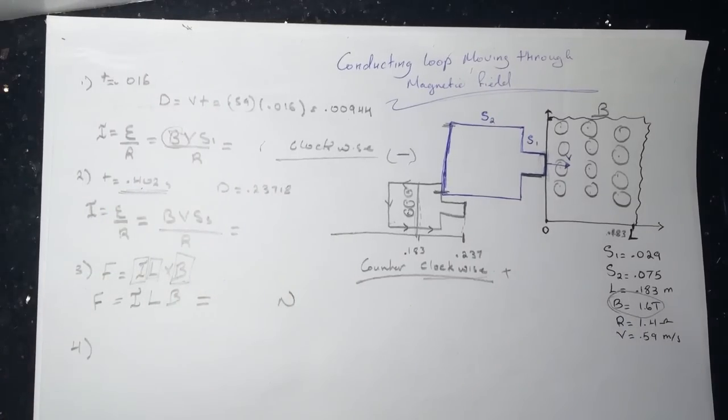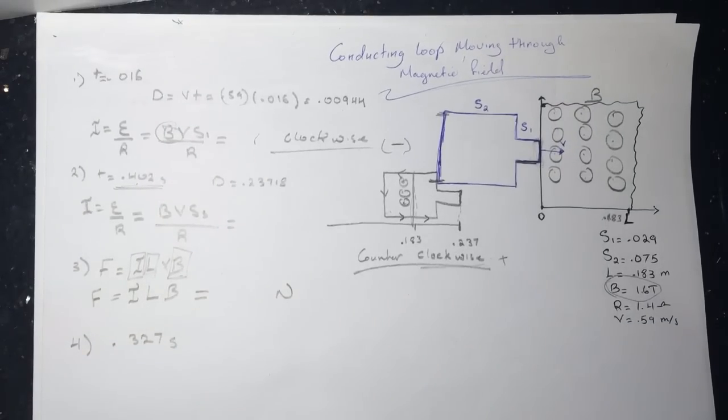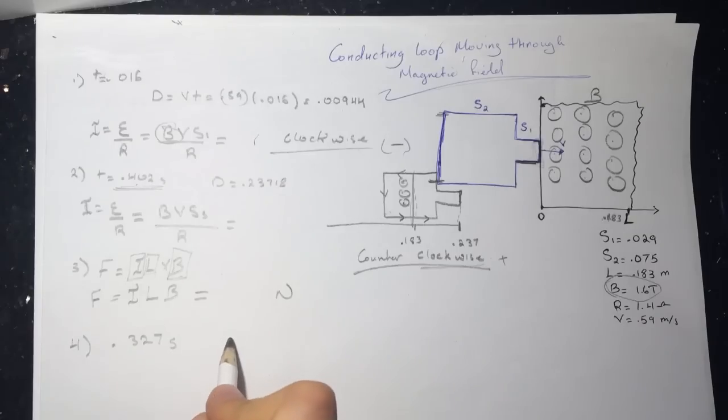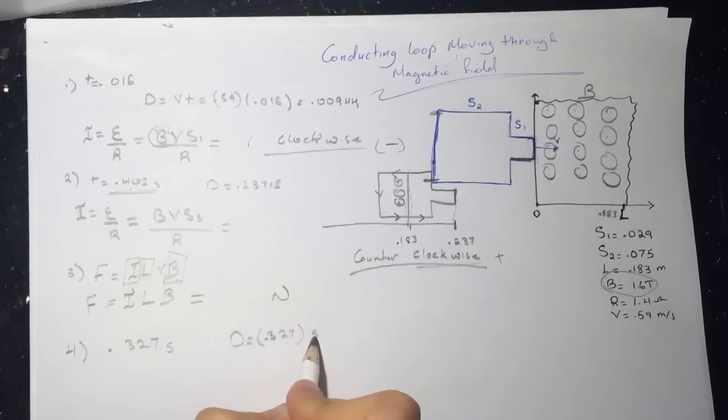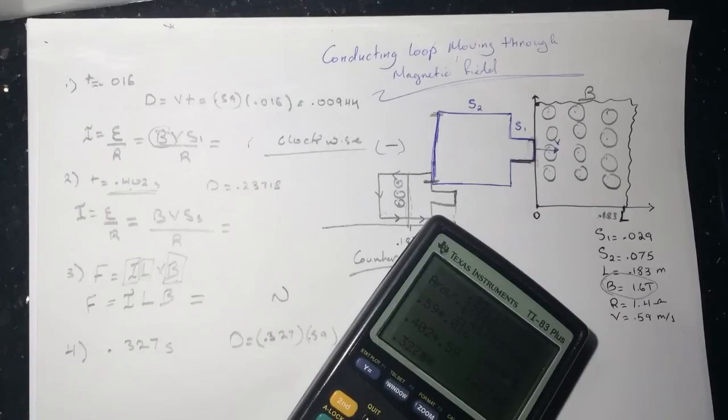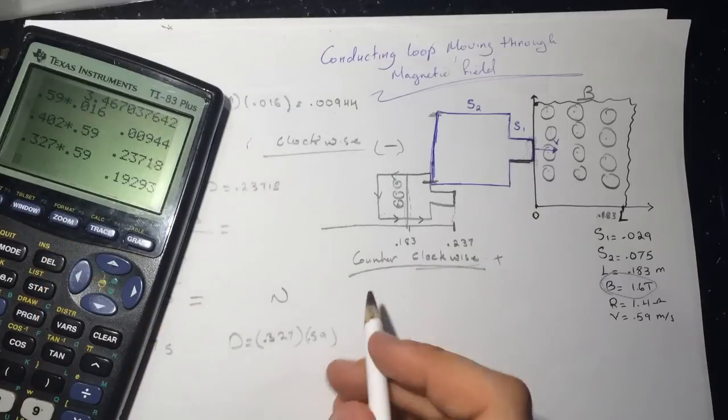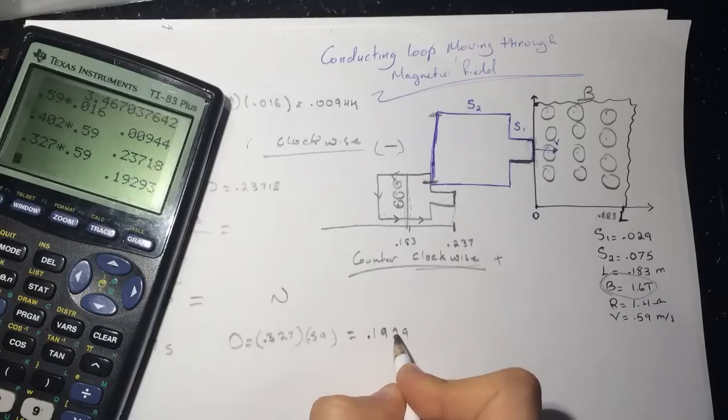So number 4 is asking, at time equal 0.327 seconds, where is the I3 induced current in the loop? So now they're asking about 0.327 at this time. If you look at this time, let's see exactly what is it. D equal 0.327 times the V, which is 0.59. Let's put this in the calculator. 0.327 times 0.59, and we got 0.1929.